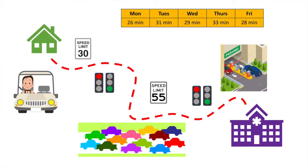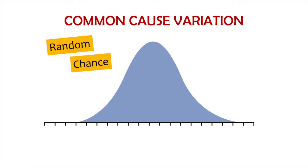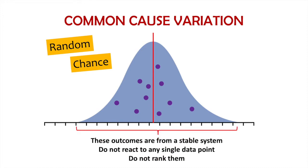You measure the time it takes every day and you notice day-to-day variation. However, this variation is the product of the same stable system. All factors of the system contribute to the results. Every stable system has certain variation in its outcomes. This is known as common cause variation, also known as random or chance variation. Each data point may be slightly different from the other, but it is randomly distributed around a stable mean and is within a certain range. We shouldn't judge or react to each data point separately; rather, know that this is the product of a stable system.